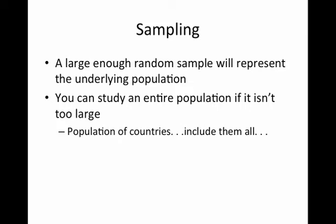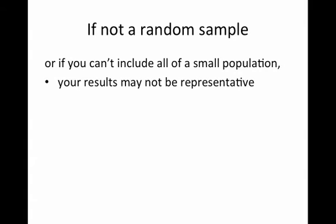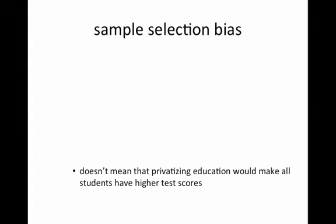For the population of countries there are only 214 — include all of them. If it's not a random sample, or if you can't include all of a small population, then your results may not be representative, and you may have something called sample selection bias.